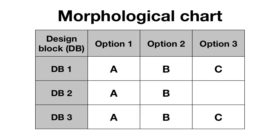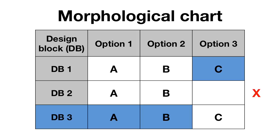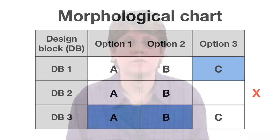For each design block, there should be a reasonable number of ideas, no more than six or eight. And each of the design blocks should be about the same level of detail. To use a morph chart, you use the following procedures: select one, none, or occasionally two ideas from each of the design blocks to compose a full design solution.